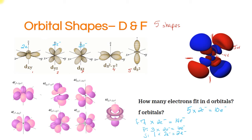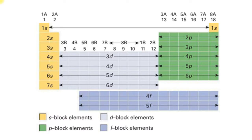Now we know essentially how many electrons can fit in each orbital category: s, p, d, f. To organize ourselves, it's easiest to remember these facts using the periodic table rather than memorizing a whole bunch of configurations. There's a nice diagram that outlines the energy level — that's the number 1, 2, 3, etc. — with the orbital shape. The yellow ones are the s block, the green ones are the p block, and the d block is light blue.